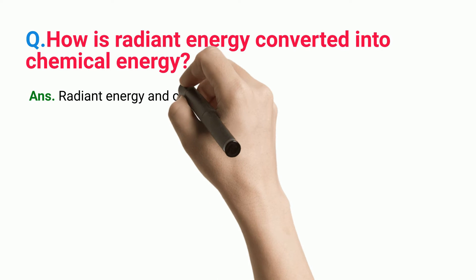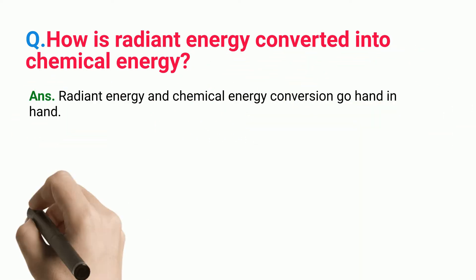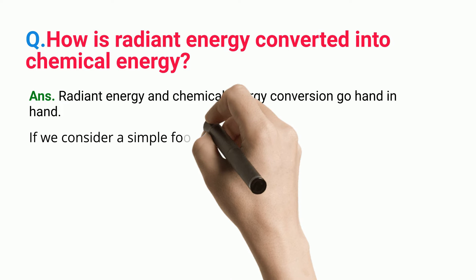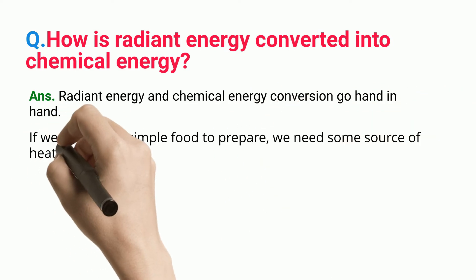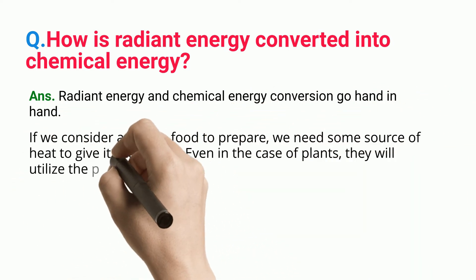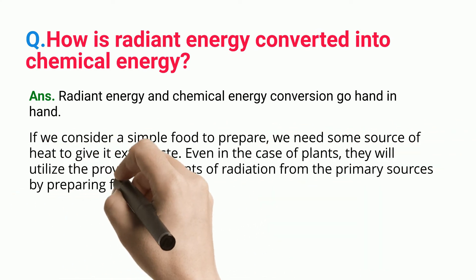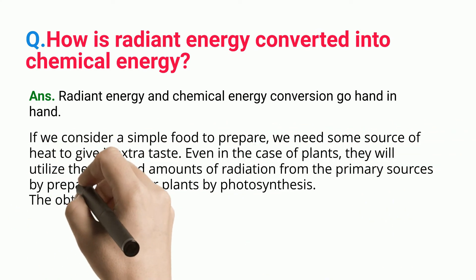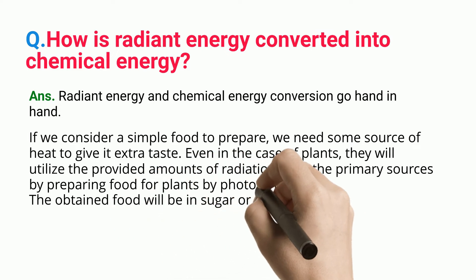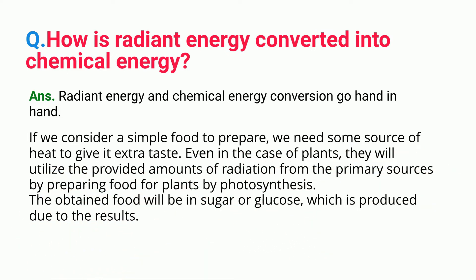Radiant energy and chemical energy conversion go hand-in-hand. If we consider a simple food to prepare, we need some source of heat to give it extra taste. Even in the case of plants, they will utilize the provided amounts of radiation from the primary sources by preparing food through photosynthesis. The obtained food will be in the form of sugar or glucose, which is produced due to the results.